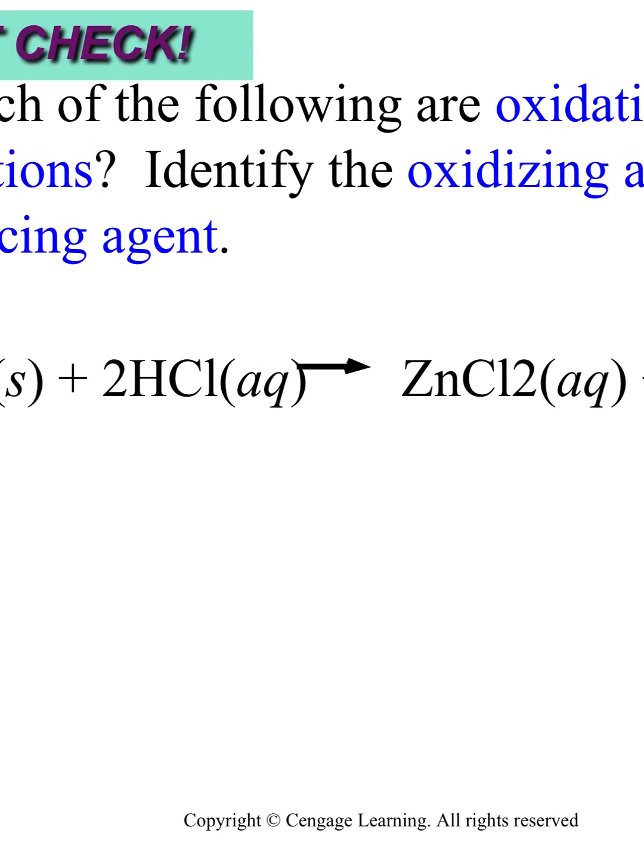So let's start here. Zinc. What's the oxidation number of zinc in this case? This goes back to rule number one. If it's an element by itself, its oxidation number is zero. So here's our oxidation number, zero.